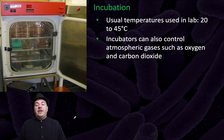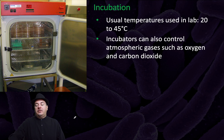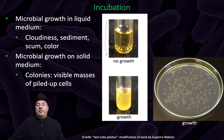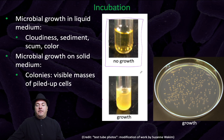The second I is incubation. The usual temperatures used for incubation in a lab are between 20 and 45 degrees Celsius. Incubators can also control atmospheric gases such as oxygen and carbon dioxide. Through incubation, you can note microbial growth in a liquid medium by a cloudiness, sediment, scum, or color. For example, this test tube sample at the top doesn't have any growth — you can detect that by it being clear. Whereas this one at the bottom has microbial growth and you can see a cloudiness to it.